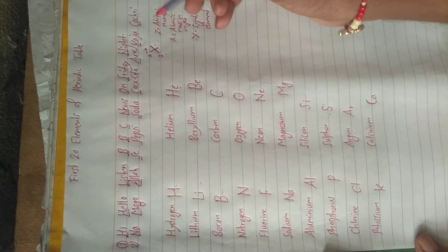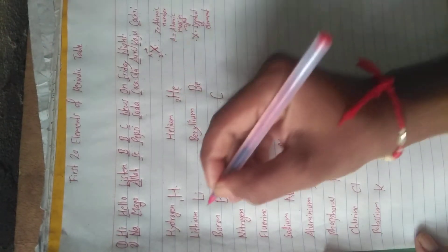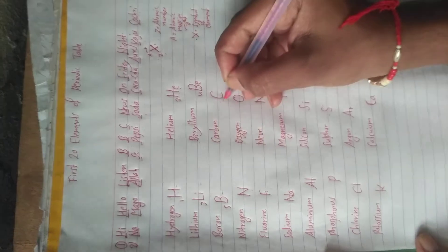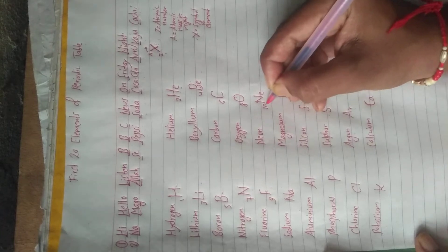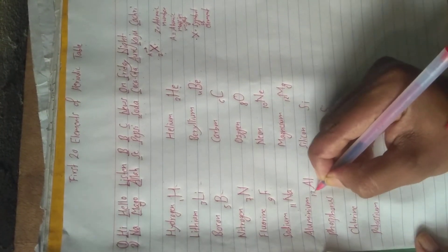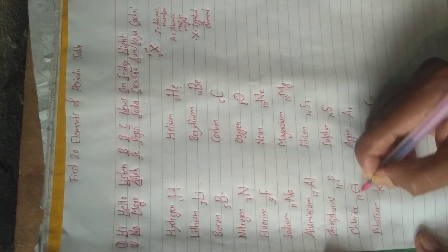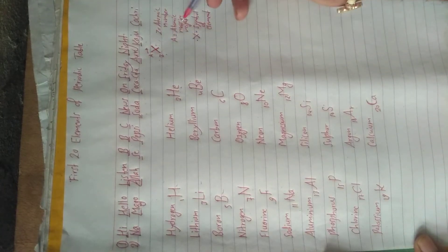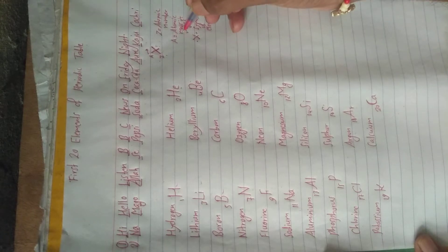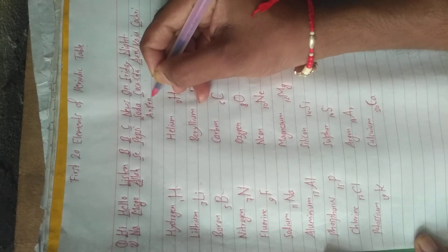The atomic number Z is easy — we just write serially: 1, 2, 3, 4, 5, 6, 7, 8, 9, 10, 11, 12, 13, 14, 15, 16, 17, 18, 19, and 20. Now A represents the atomic mass. Atomic mass is nothing but: A = number of protons + number of neutrons.